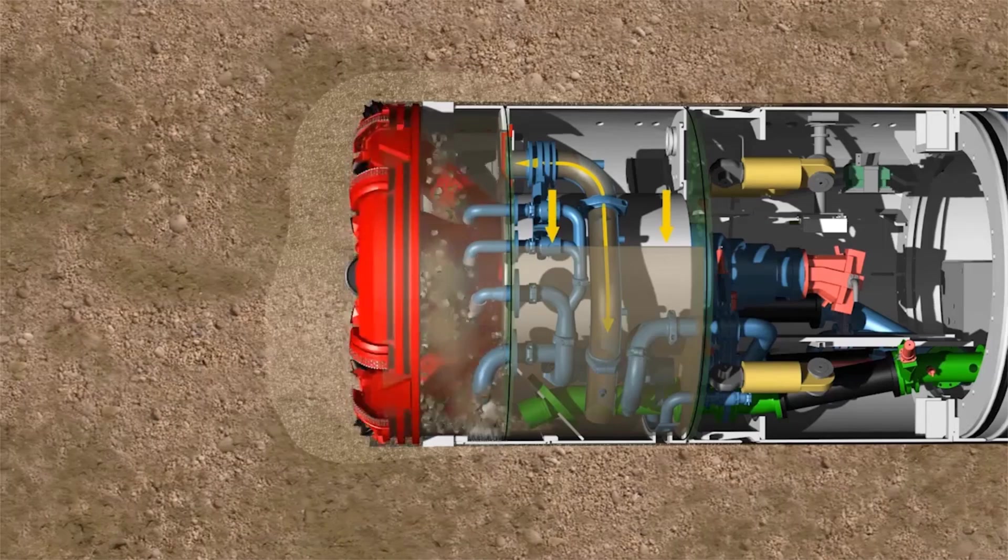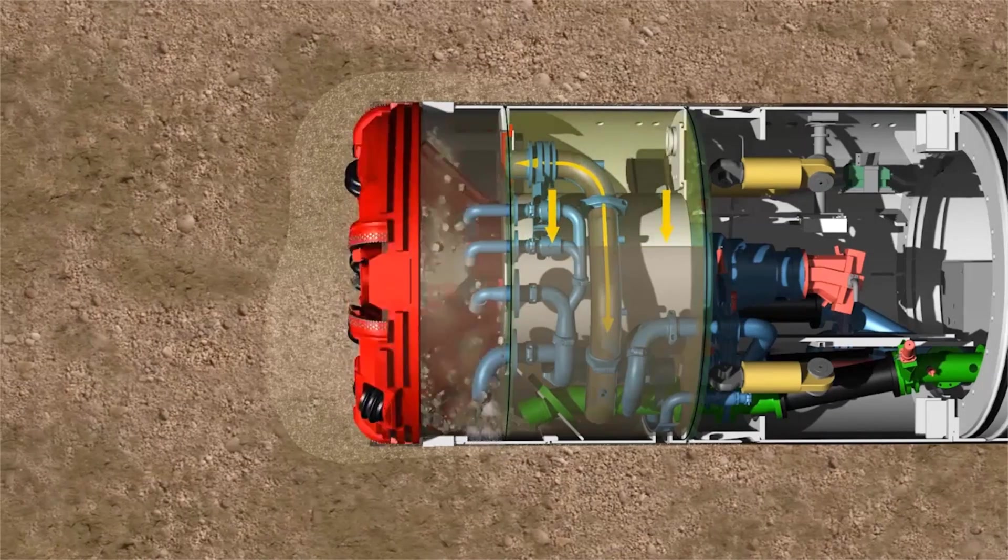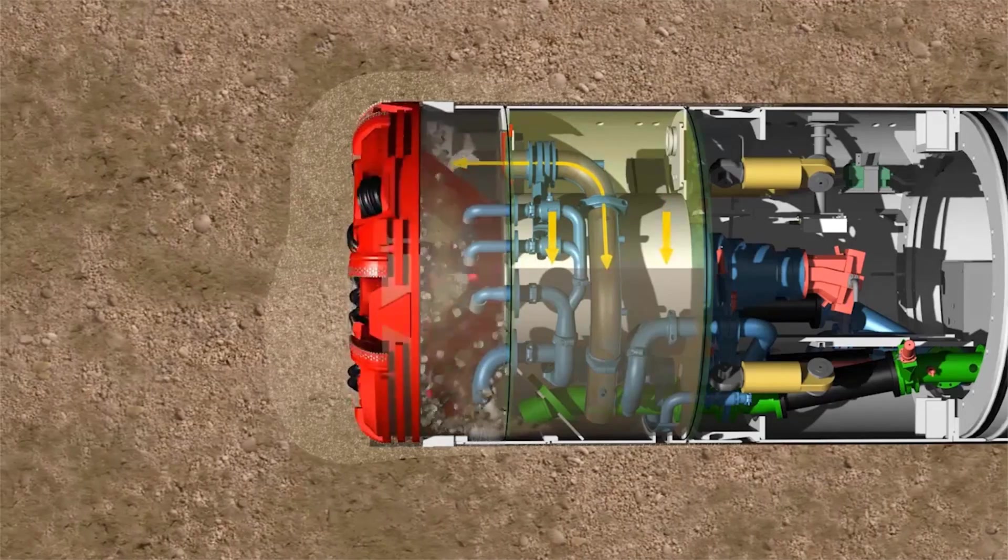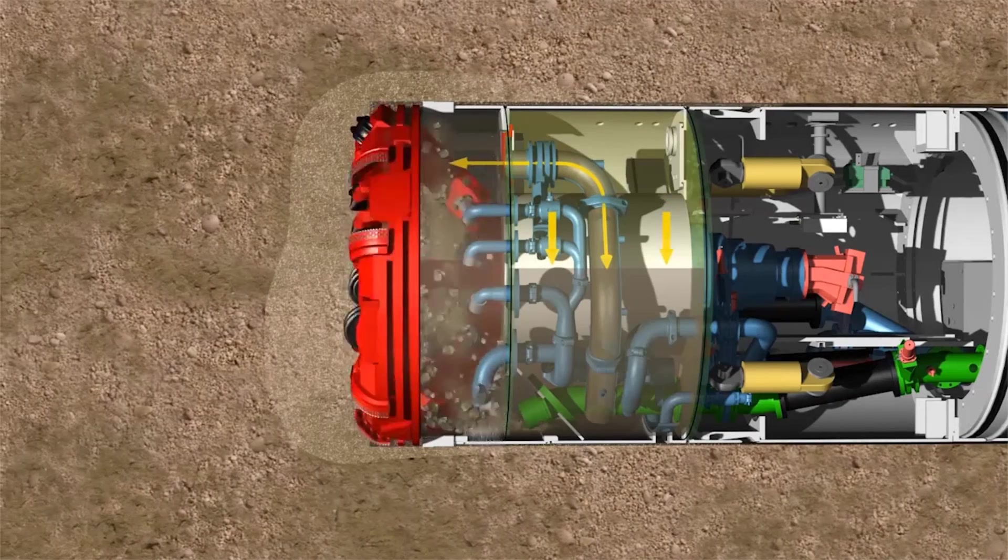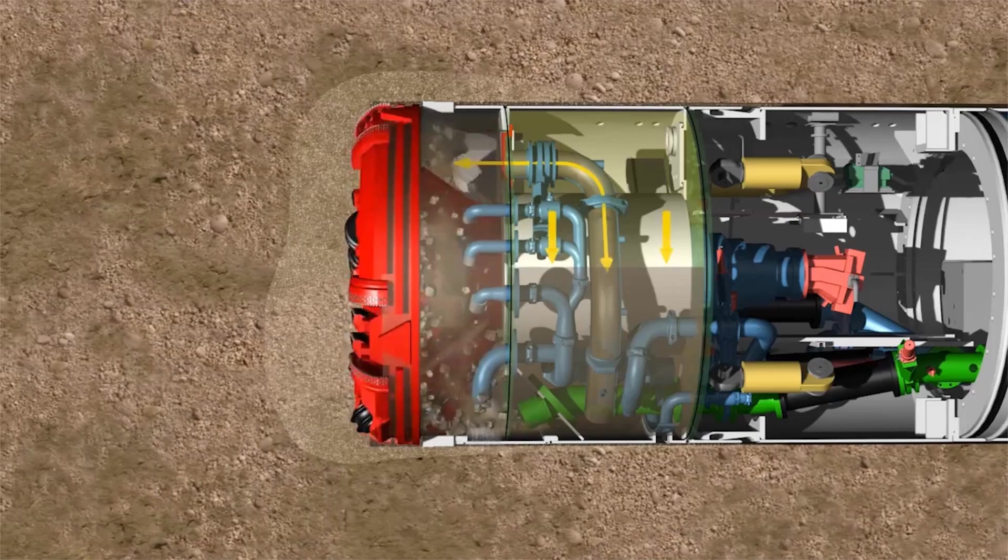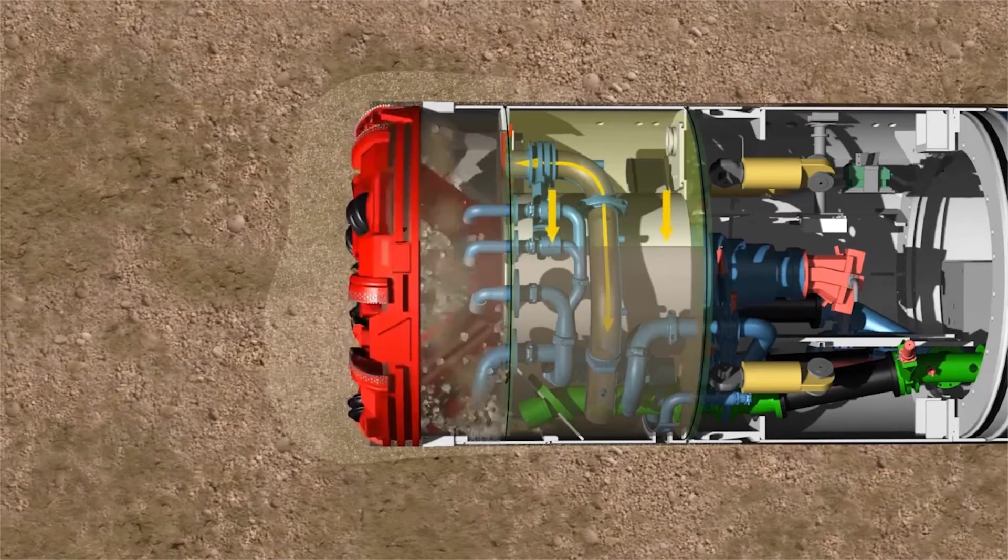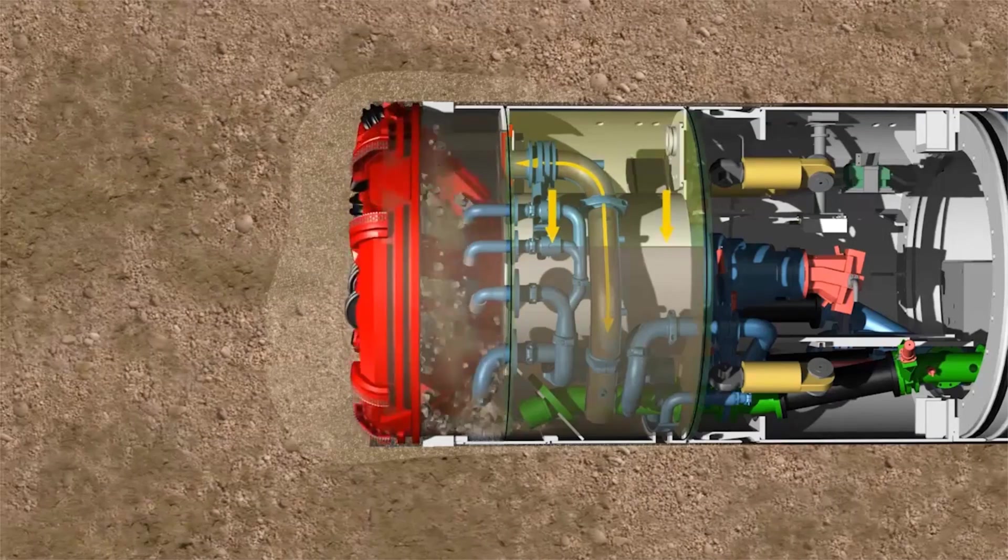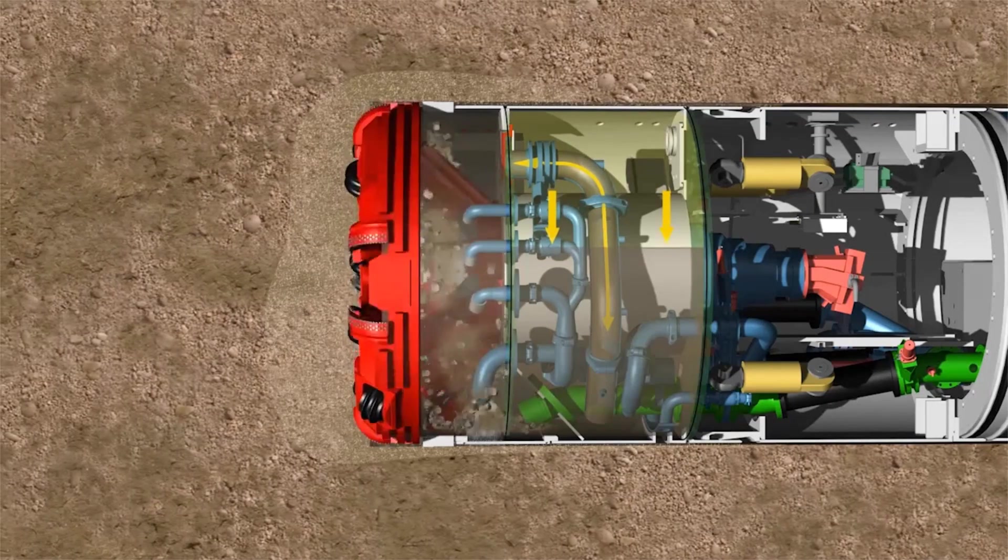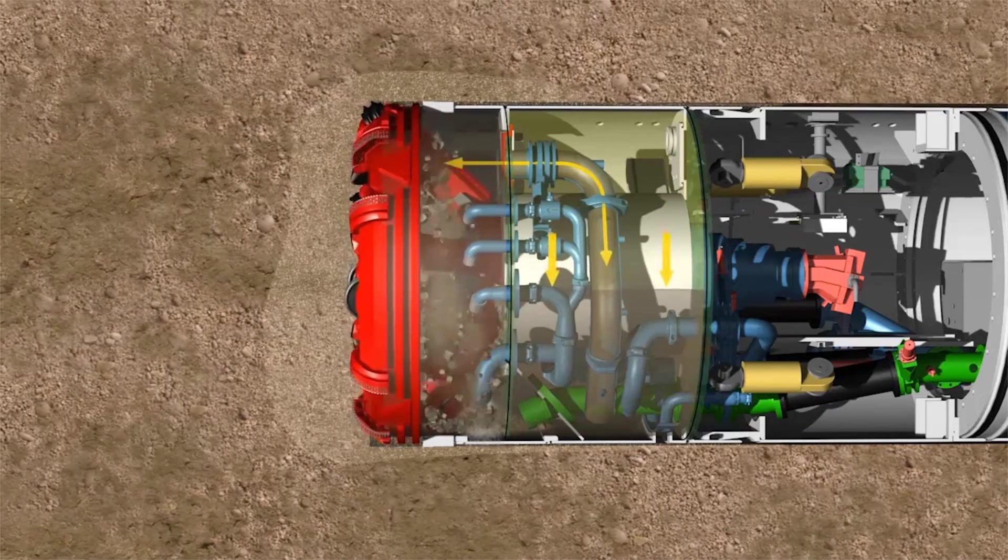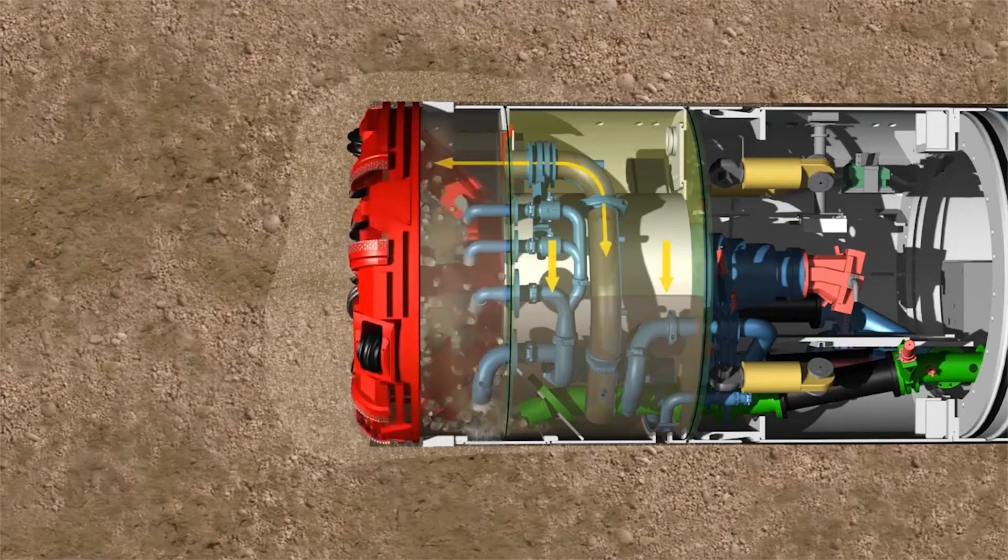Any pressure variations at the tunnel face are now balanced by the compressible compressed air cushion with its damping effect. The slight overpressure in the pressure chamber set as a default on the compressed air control system ensures that the bentonite can penetrate into the tunnel face and forms a filter cake. This supports the tunnel face and ensures safe tunneling without settlement or heave.